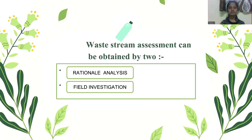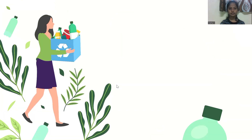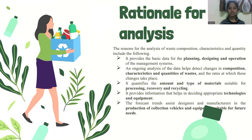There are two ways in which waste stream assessment can be obtained: rational analysis and field investigation. It is usually done for planning, designing, and operation of management systems. Whenever analysis of material is done, it will help us to detect the changes happening in the composition, characteristics, and quantities of waste, so that we can design our equipment and processes according to the given data analysis.